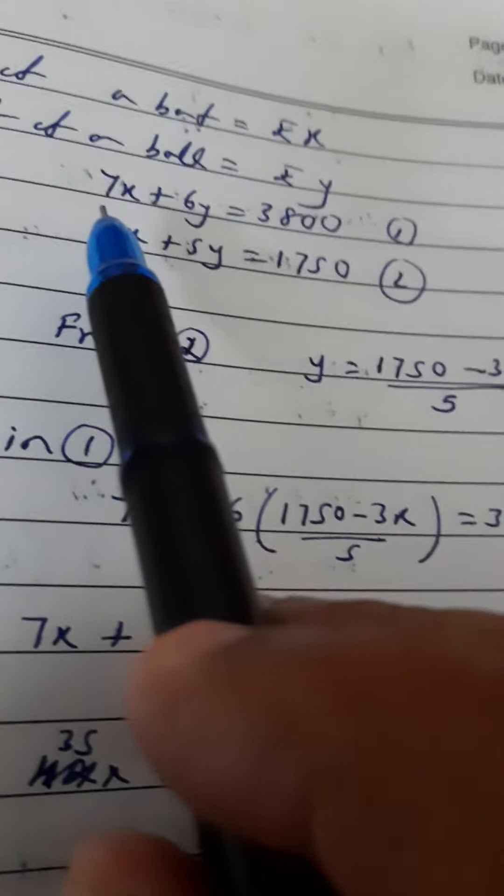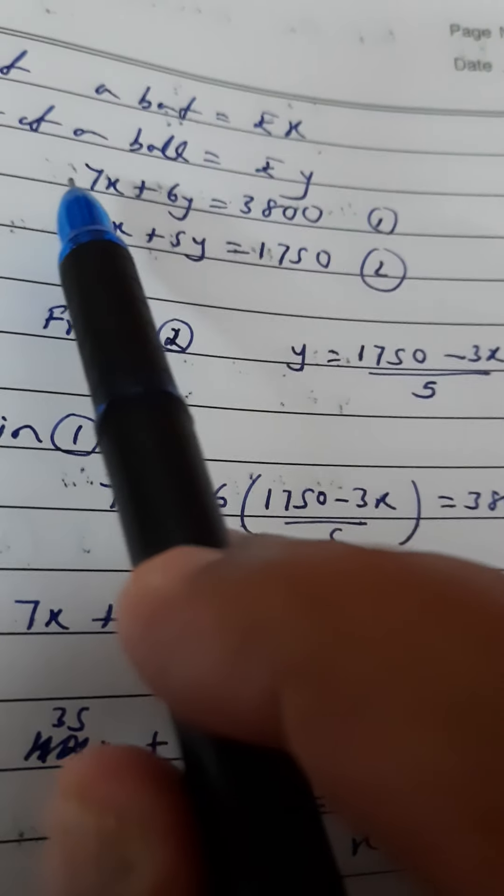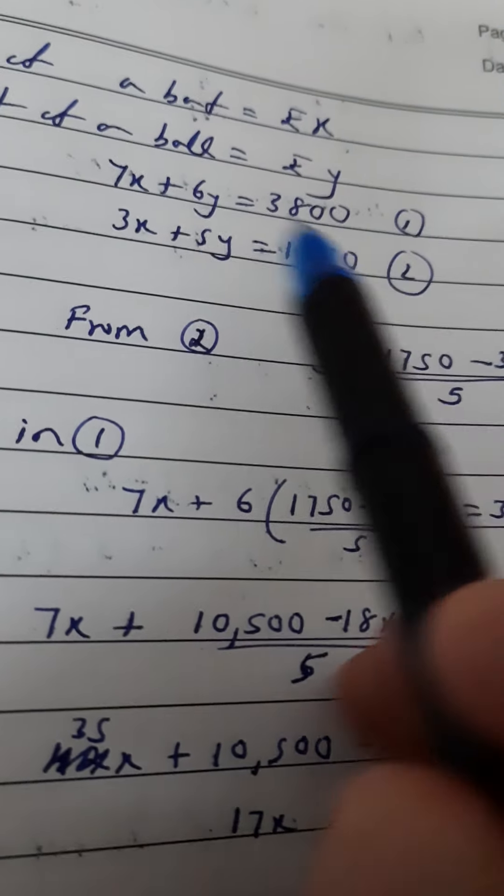So 7 bats and 6 balls cost 3800. Therefore, 7x plus 6y equals 3800. This is equation 1.